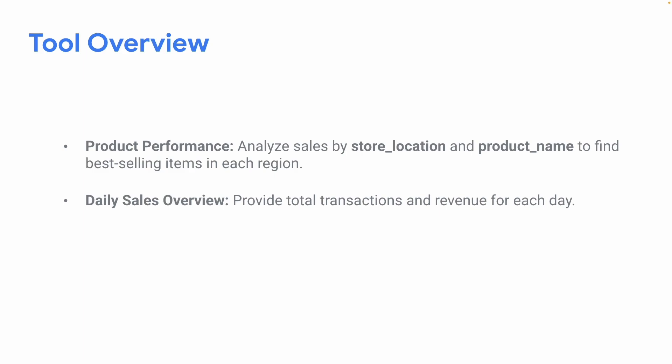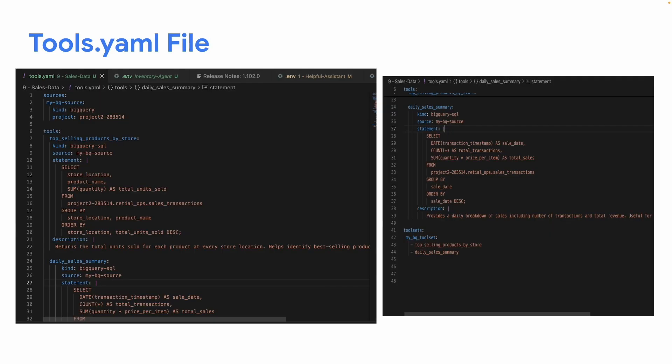The tool overview: the first tool analyzes sales by store location and product name to find the best-selling items in each region. The second provides total transactions and revenue for each day. The tools.yml file will have two main tools — top selling products by store, and daily sales summary — which we'll be building from scratch shortly.